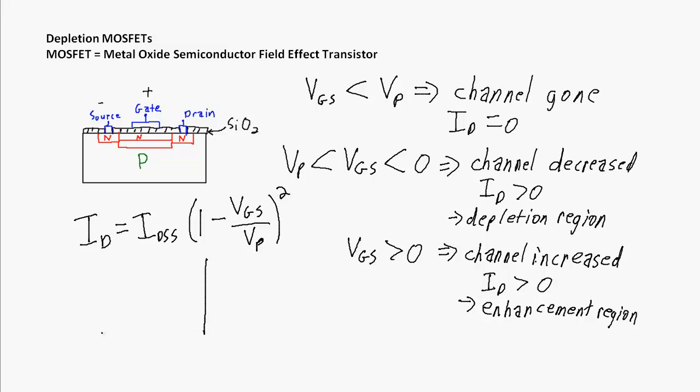Remember with JFETs, if we were to plot the relationship between ID and VGS, we had some VP value down here and some IDSS value up here, and it increased quadratically. That was it for a JFET. With a depletion MOSFET, we get the same graph - we could have the same values of VP and IDSS as a JFET.